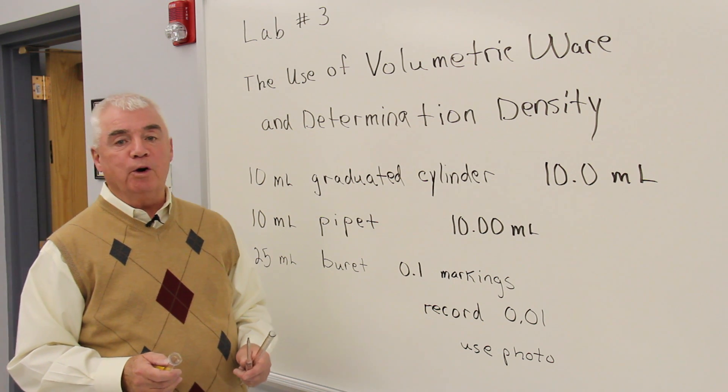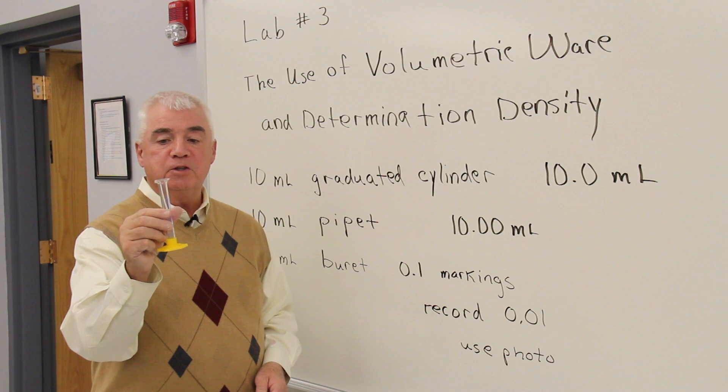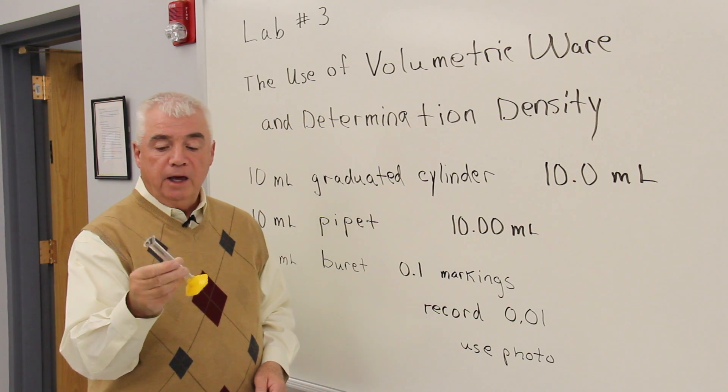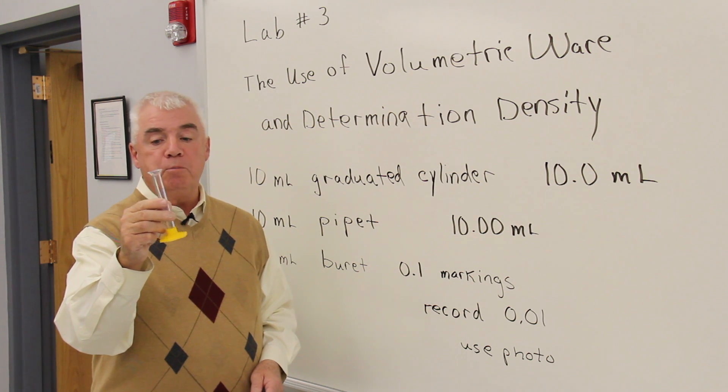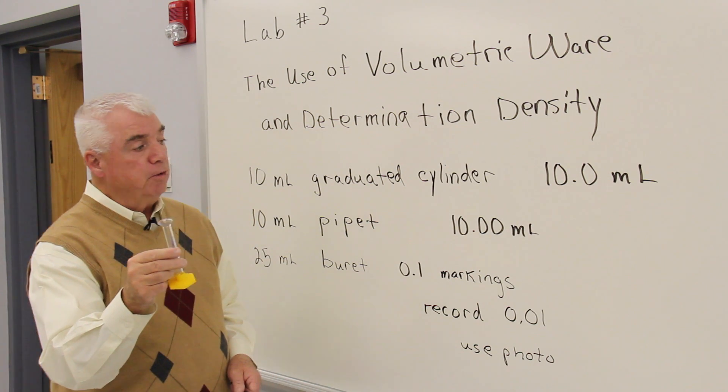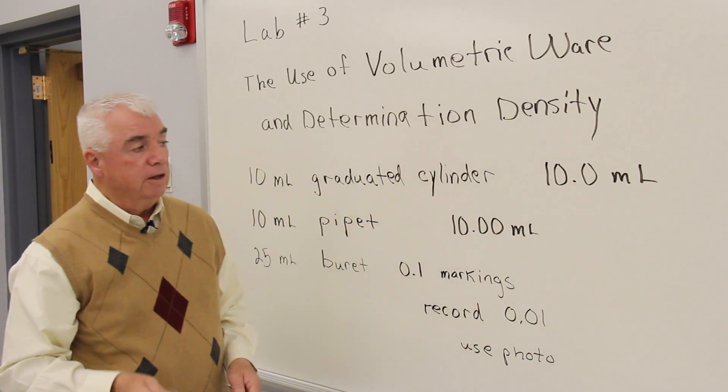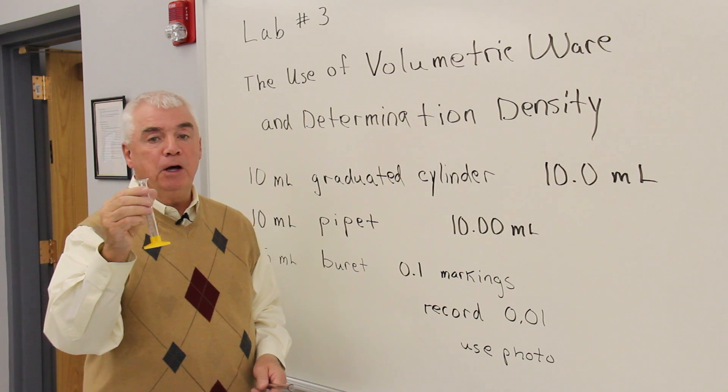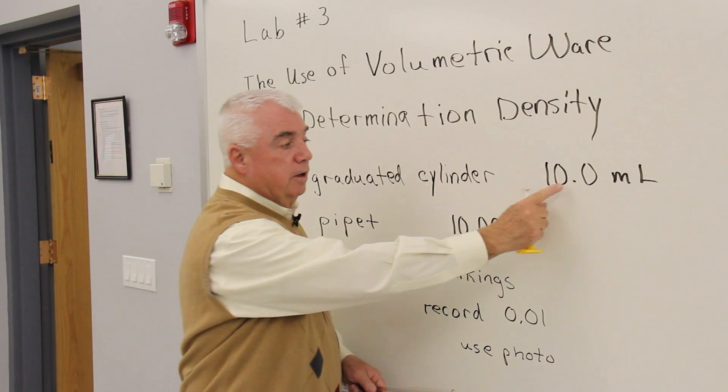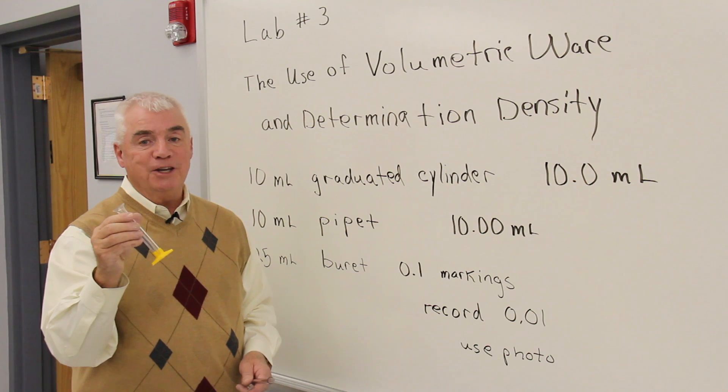There are three pieces of glassware that are used in this experiment. One is a graduated cylinder. This is a 10 milliliter graduated cylinder, and it has markings to every 0.25 milliliters, and so the manufacturer tells us that we can record the volume to the tenth of a milliliter. So if you measure out 10 milliliters, you want to be sure and record, add that zero so that it's to the tenth.